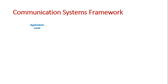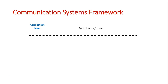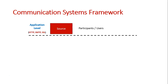Our first level is the application level. This level is primarily where participants and users are involved — this is the end they see, where they're interacting with the communication system. At first there is a source, and the source could be, for example, a participant creating an email message.